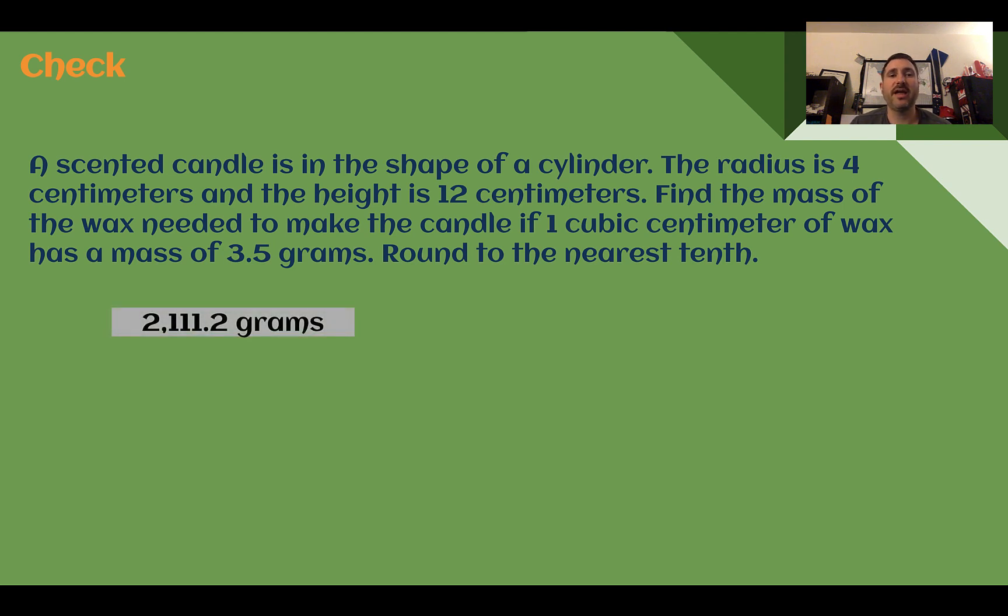Check your answer. You should have said that this would take about 2,111.2 grams. To get this first, let's find our volume of our cylinder. So its radius is 4. So 4² height of 12 times 12. And then we still need to do times π. 4² is 16. 16 times 12, 192. And then still times π. If I use a calculator to multiply this out, I get about 603.185. So I'm just going to round that to 19. This is how many cubic centimeters we have in our candle. Then it says it takes 3.5 grams to make 1 cubic centimeter. So I need to multiply this by 3.5. Again, using my calculator, I got 2,111.15. Rounding to the nearest tenth. So I'd have to knock that 5 off up to a 2. Which gives us our answer.